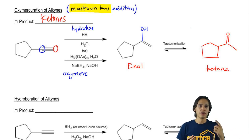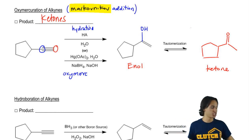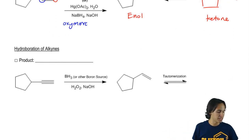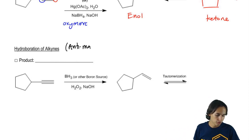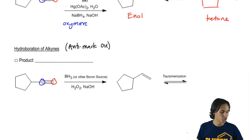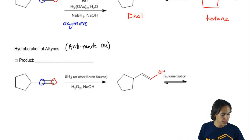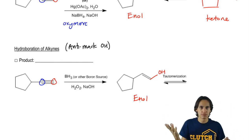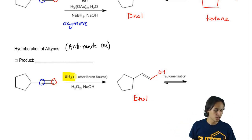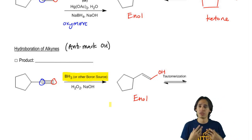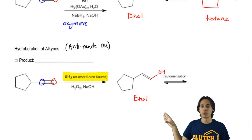Remember we had three different ways to add alcohol: hydration, oxymercuration, and hydroboration. What was interesting about hydroboration is that it does everything opposite — hydroboration is an anti-Markovnikov addition of alcohol. So if I have the blue site and the red site, it actually adds to the less substituted position. Notice that I said BH3 or another boron source, because there are a lot of different boron sources your professor could use, so be aware of the one your professor likes.